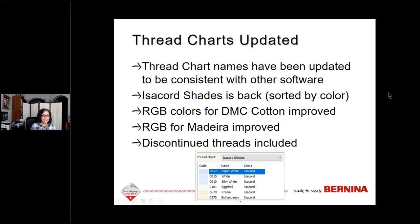Thread charts have been updated — names are now consistent with other software. The Isocord shade is back, sorted by color rather than numerically, making it easier to pick a color when you don't know the number. RGB colors for DMC cotton and Madeira have been improved. Discontinued threads are also included so that if you still have them in your stash you can apply them to your design — they'll be labeled as discontinued so you know you can't purchase them but can still see what the color looks like.